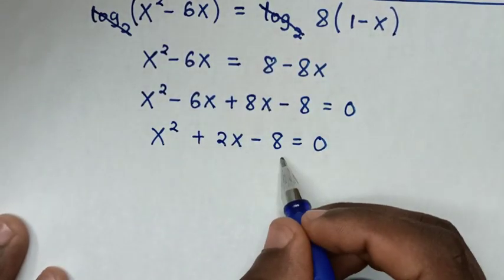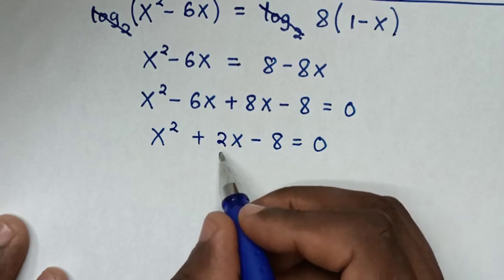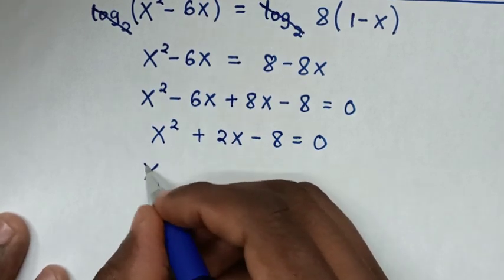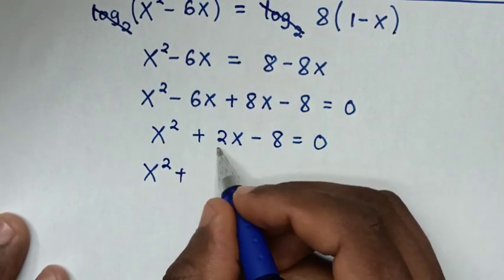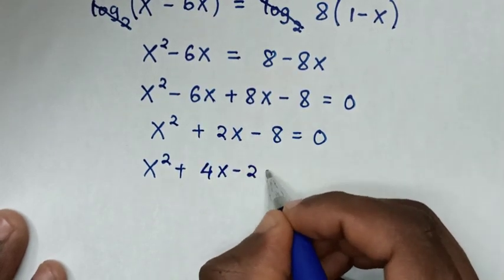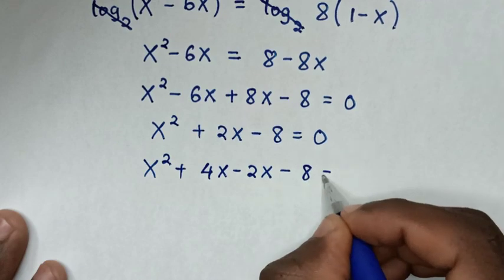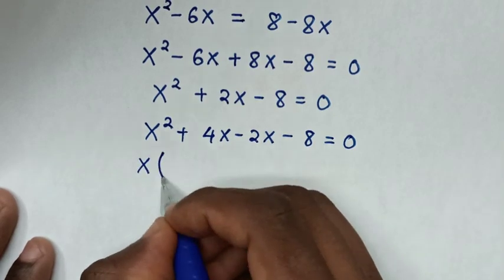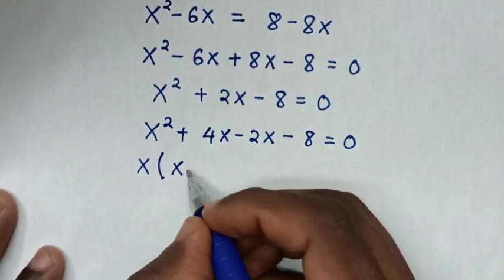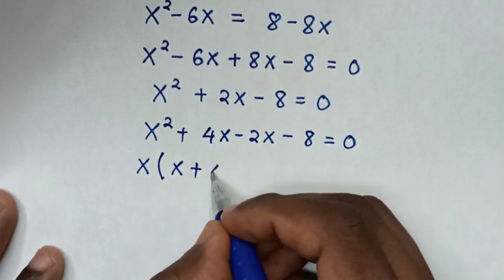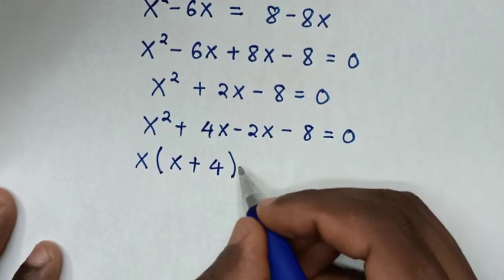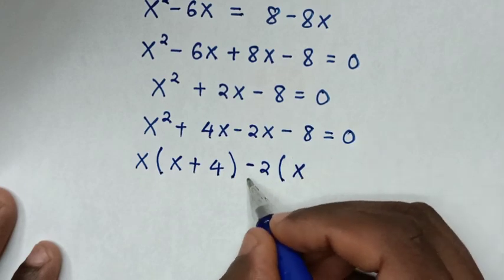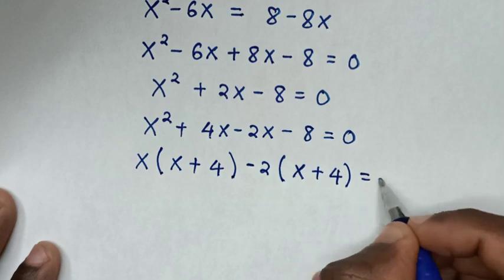Then we'll solve this quadratic equation by factorization, where the sum is 2 (coefficient of x) and the product is negative 8. So x² + 2x becomes x² + 4x - 2x, minus 8 equals 0. From here x is common, so we take x out: x(x + 4), then negative 2 is common giving negative 2(x + 4) equals 0.